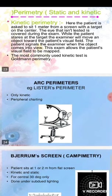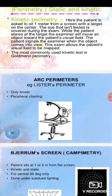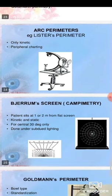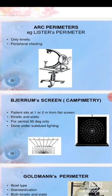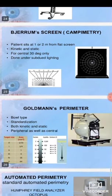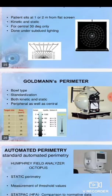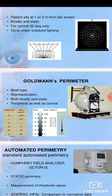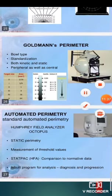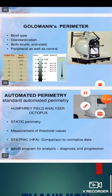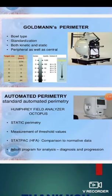There are various perimetry parameters. The arc perimeter, for example Lister's perimeter, is only kinetic and performs peripheral charting. Then there is campimetry or the Bjerrum screen. Next is the Goldmann perimeter. The last is the automated perimeter, also called the Humphrey field analyzer octopus, which performs static perimetry.